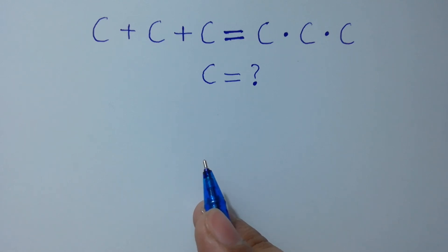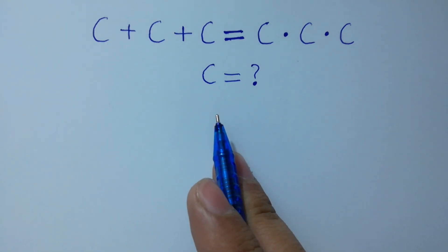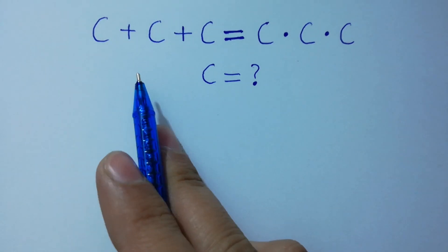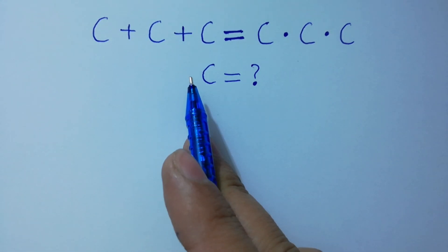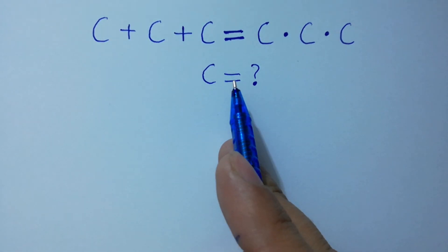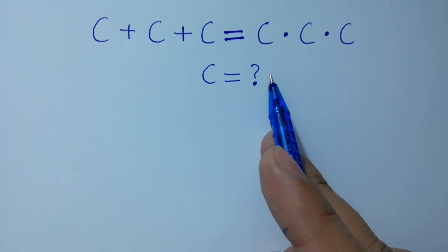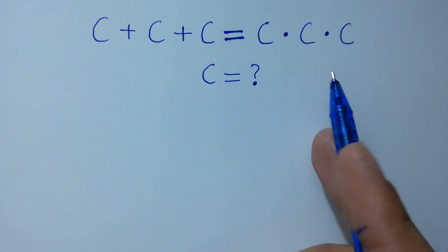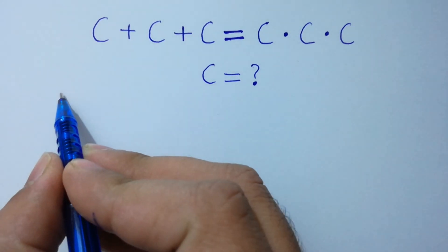Hello friends. Find the value of c if c plus c plus c is equal to c times c times c. Let's have a solution here.